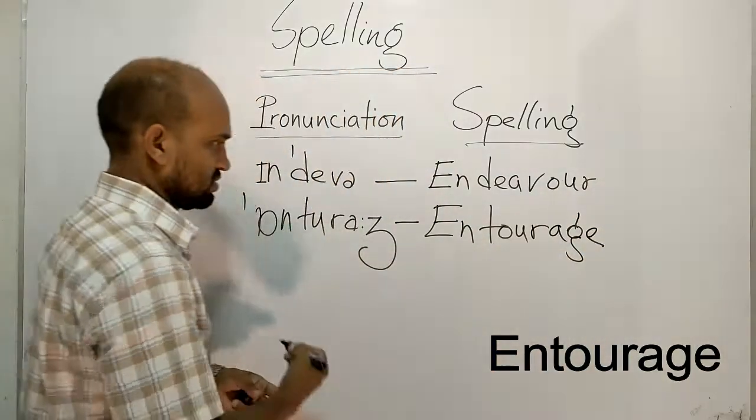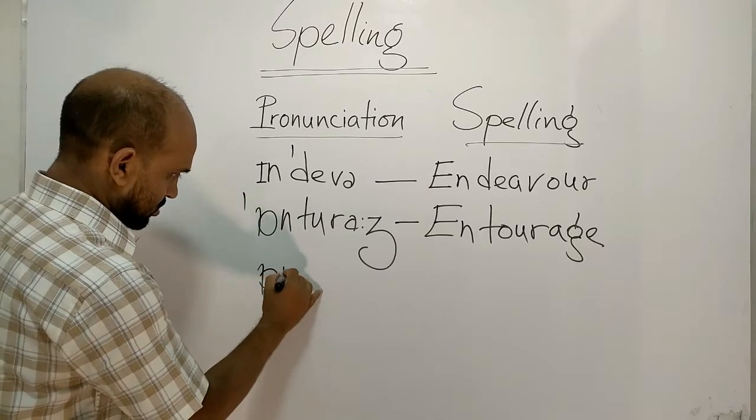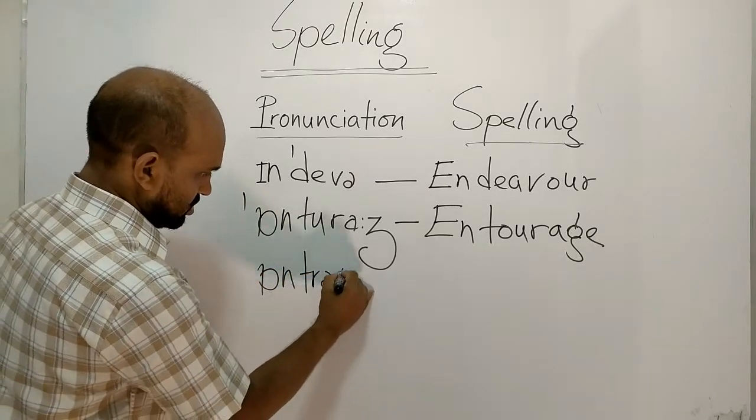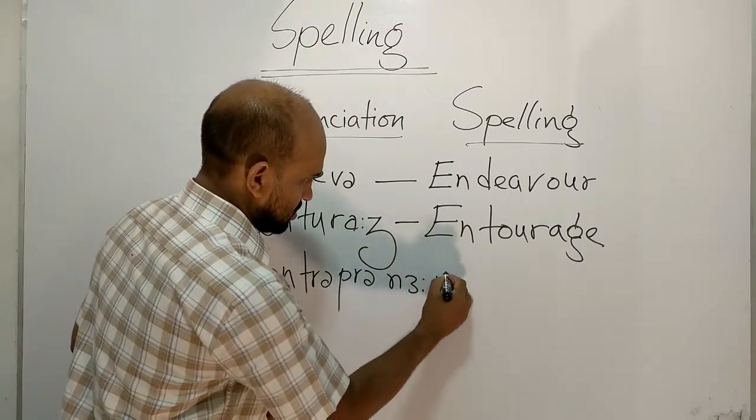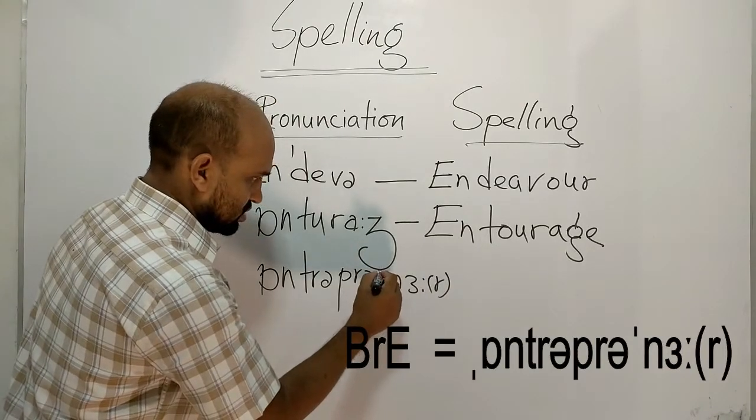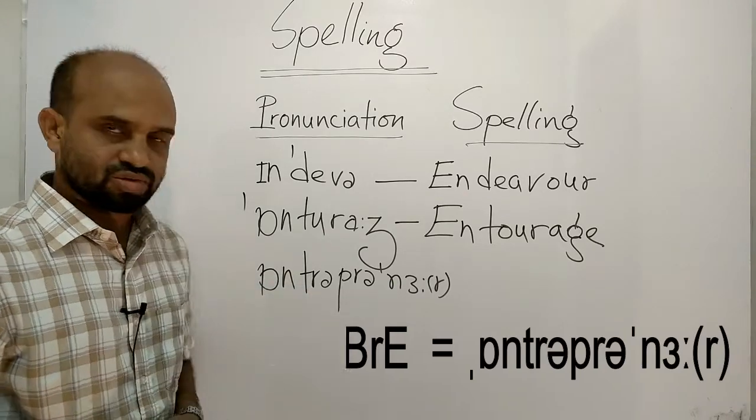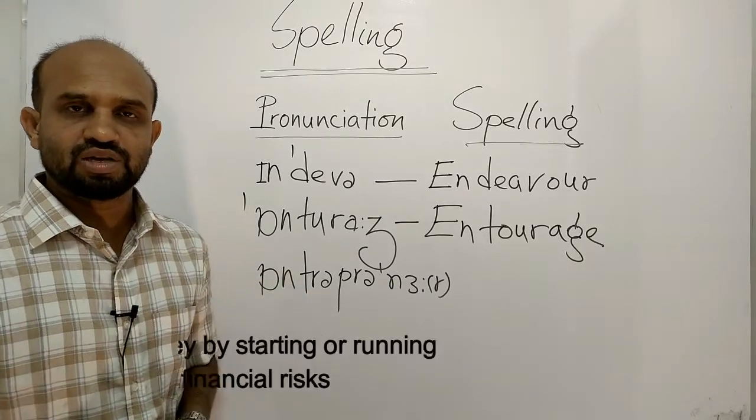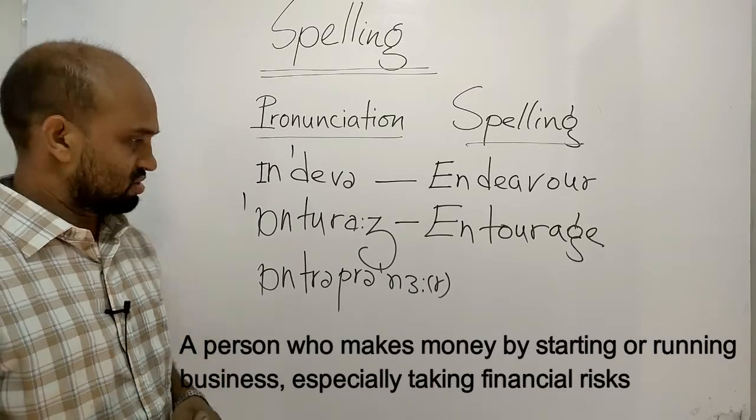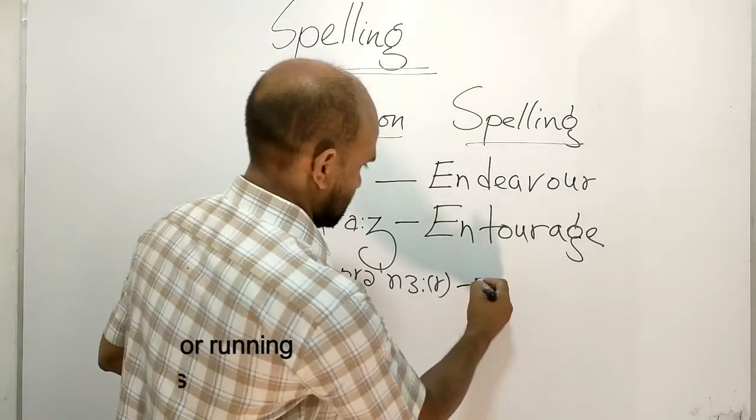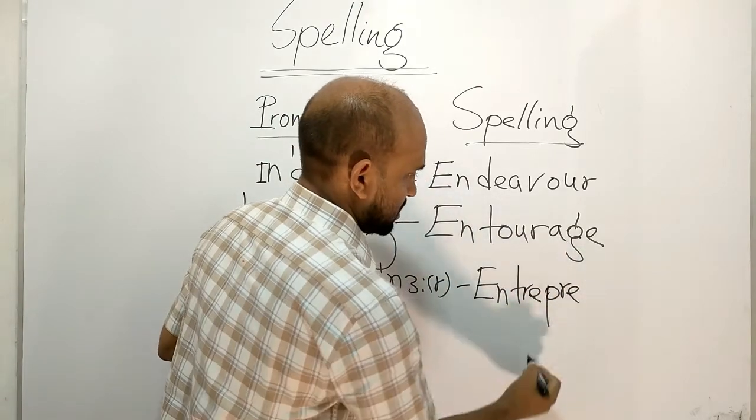Next one is entrepreneur. The meaning is a person who makes money by starting or running business, especially taking financial risks. The spelling is E-N-T-R-E-P-R-E-N-E-U-R, entrepreneur.